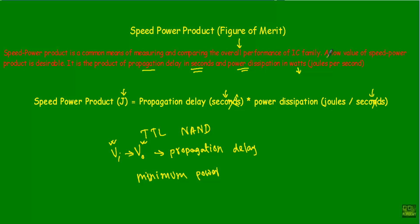A low value of the speed power product is desirable. We want a logic gate in which propagation delay is minimum and power consumption is minimum. Since both terms should be minimum, the speed power product should have a low value, and the smaller this value, the greater the overall performance of that IC logic family.